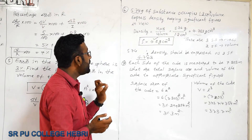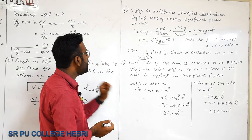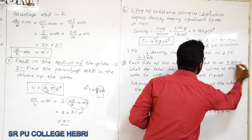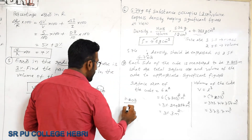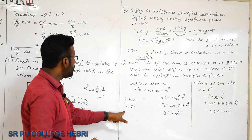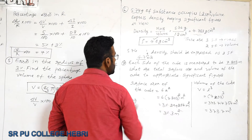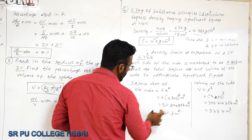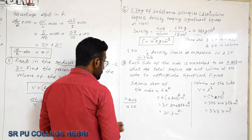Next problem: each side of a cube is measured to be 7.203 m. Find the total surface area and volume of the cube, appropriated to significant figures. The side 7.203 has four significant figures, so both the surface area and volume must be rounded to four significant figures.